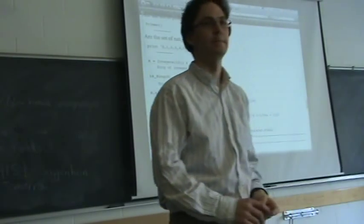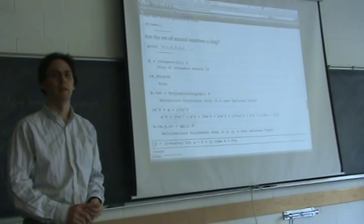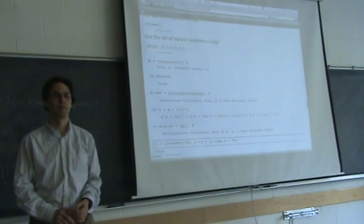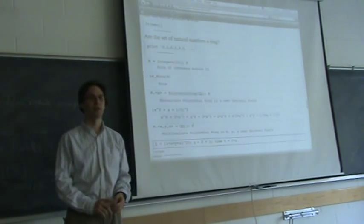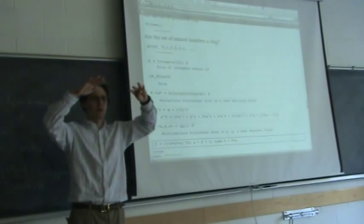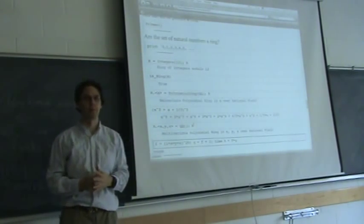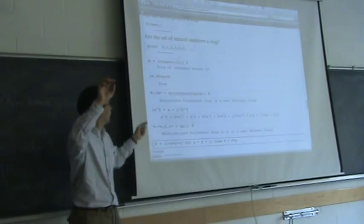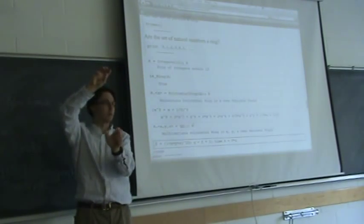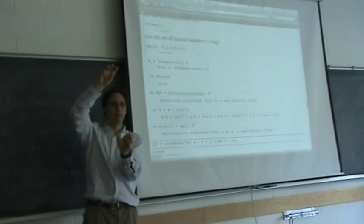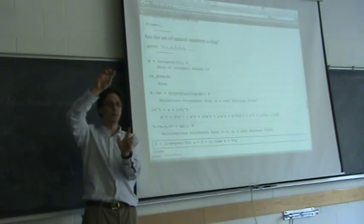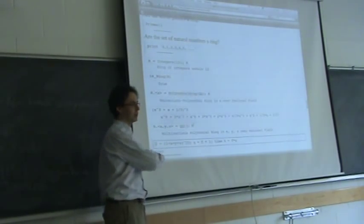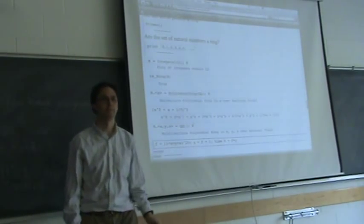Student question: does the 'ring' command check all the axioms to verify that what's specified is actually a ring? Answer: No, it's a ring according to a class hierarchy. In SAGE there are a whole bunch of different classes in the sense of object-oriented programming. One of the base classes is called 'ring', and the function 'is_ring' simply checks whether the class for this particular object derives from that base class. You could make up your own class and call it a ring, but that won't affect this command.